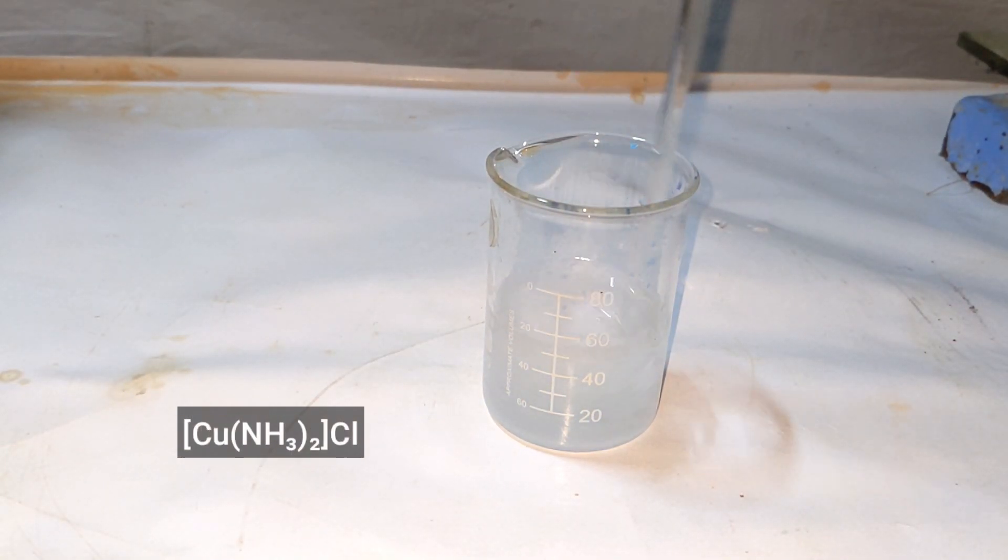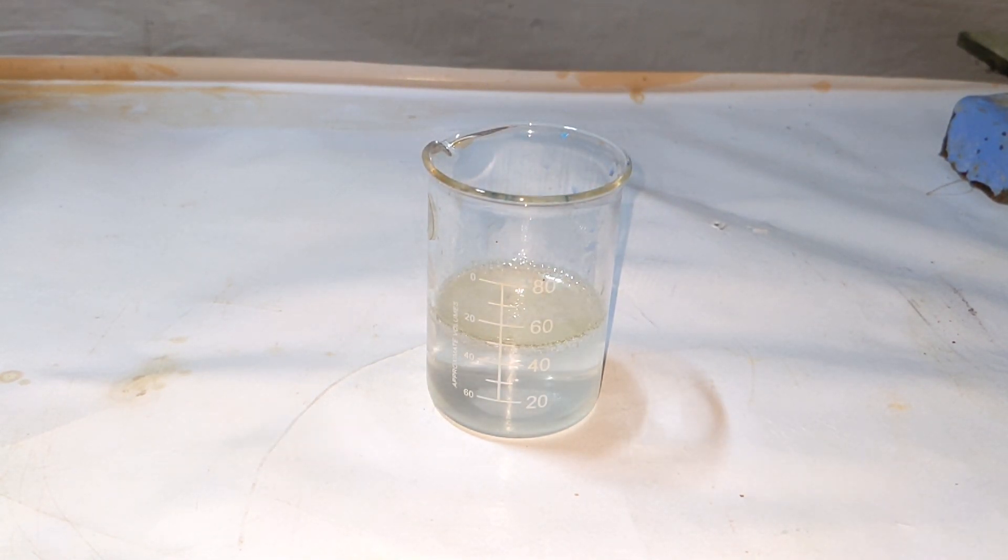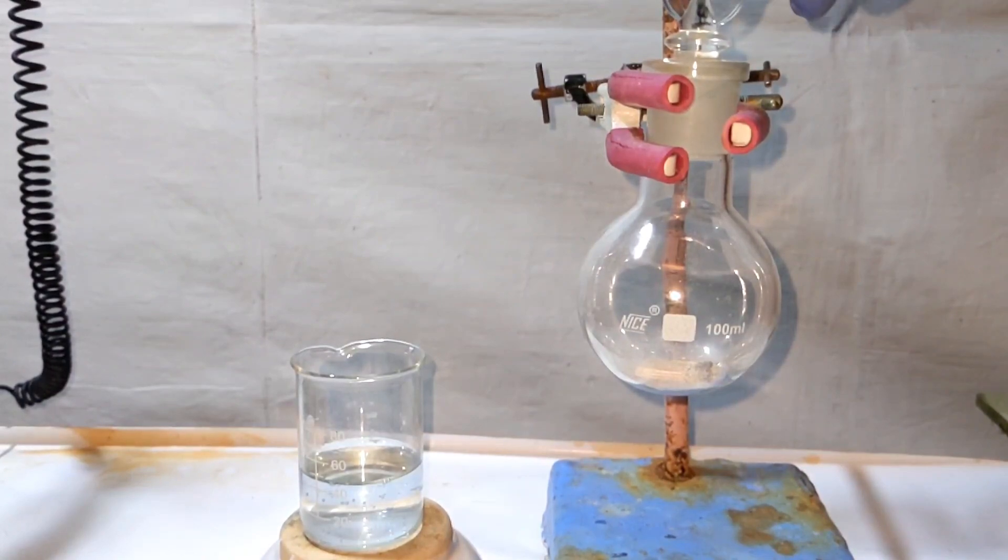You will notice that the deep blue color immediately disappears, resulting in a colorless clear solution, and that is the copper 1 complex. Next we make acetylene gas.